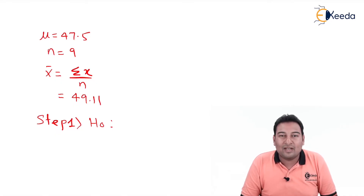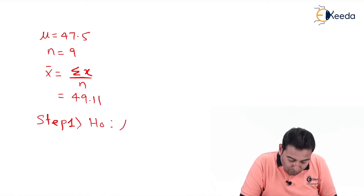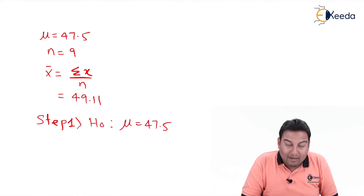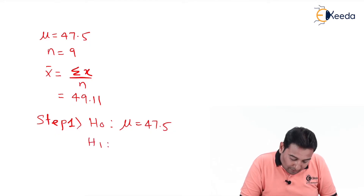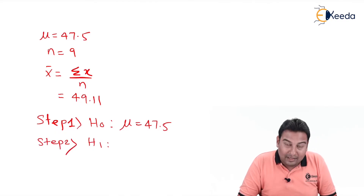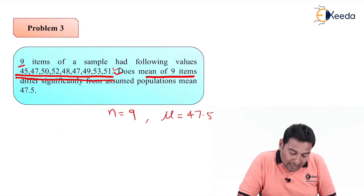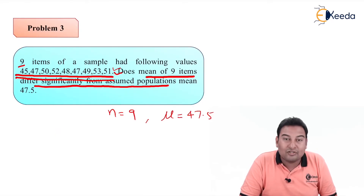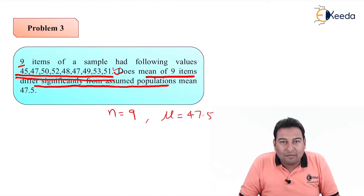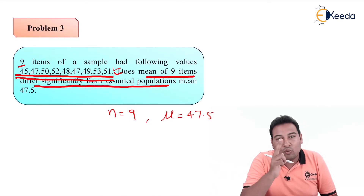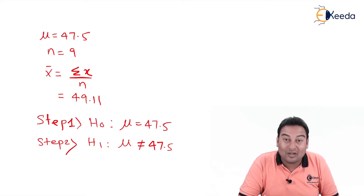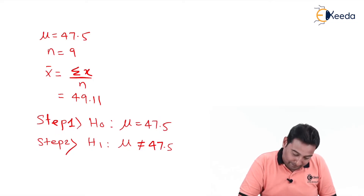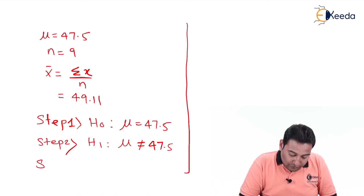Step number one is the null hypothesis H0. As discussed for this type, μ is equal to 47.5. For the alternate hypothesis, we have three options: not equal to, less than, or greater than. In this problem it is asked whether the mean differs significantly or not — only two options — therefore the alternate hypothesis is μ not equal to 47.5, which indicates a two-tail test.